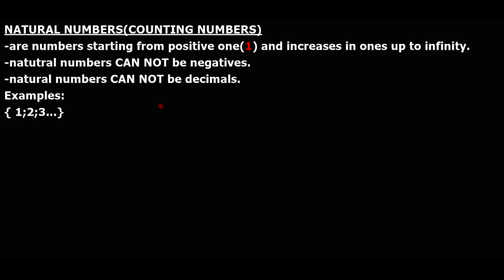As long as a number starts from one and increases by one, that number is a natural number. It's important to understand that natural numbers cannot be negative, because we count from one and increase going towards positive infinity: one, two, three, four, and so on.